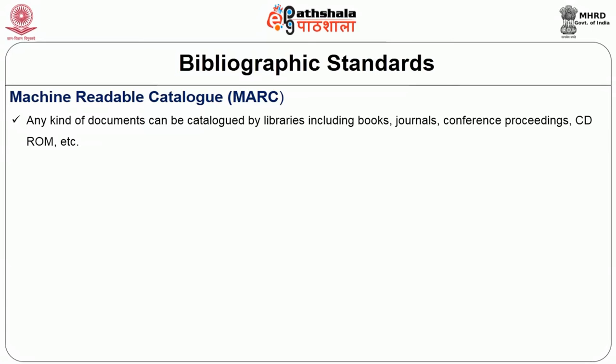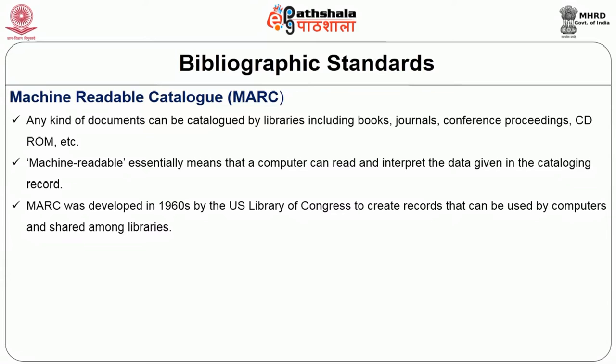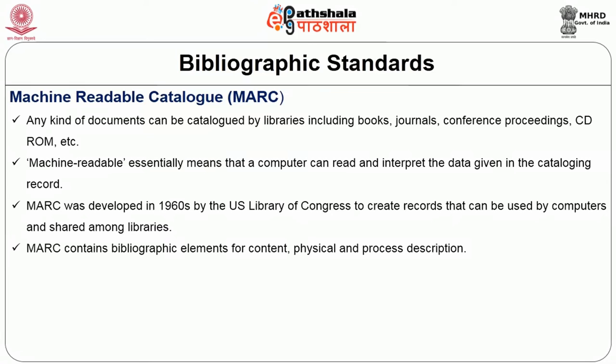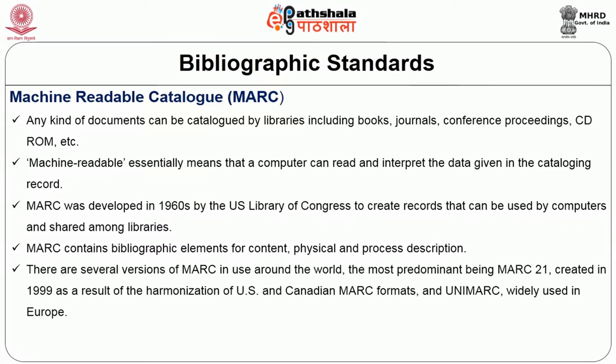Machine readable essentially means that not only humans but machines — programs — can read and interpret this catalog data and convert it to respective formats like XML. MARC was developed in the 1960s by the Library of Congress and is used so that computers can share information between libraries. MARC contains bibliographic elements for content, physical description, and processing. There are several versions of MARC in use worldwide, the most predominant being MARC 21, created in 1999.